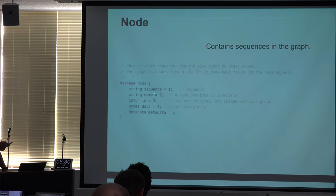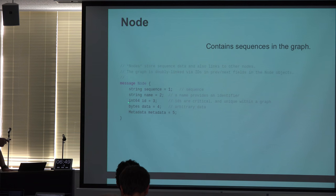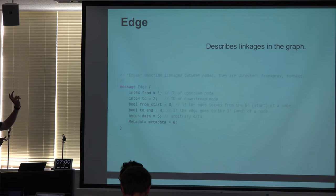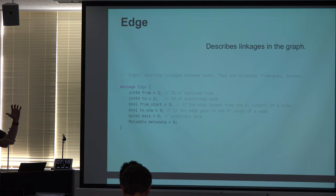A node links a sequence, an ID, and maybe some auxiliary information. An edge links from one node to another — these IDs map back to the node ID, and it could be a self-link. You can have a natural link from the three-prime end of a sequence into the five-prime of the next one, or going in the reverse direction — coming from the start. If you're going into the reverse end relative to the way it's represented in the node sequence, then you'd say you're going to the end. These two flags represent all the different kinds of links.